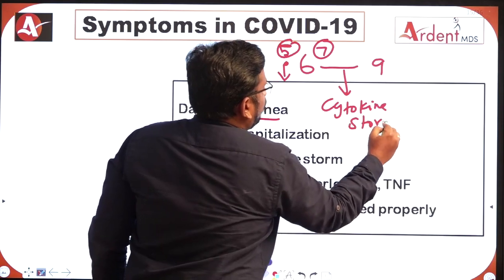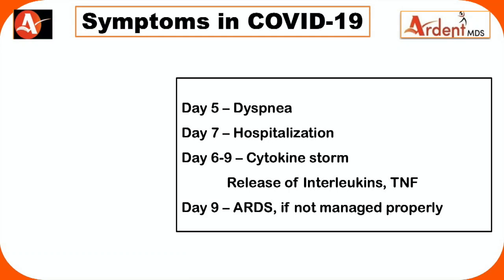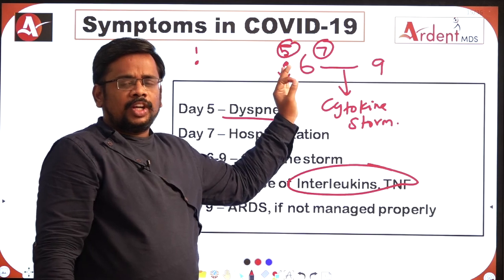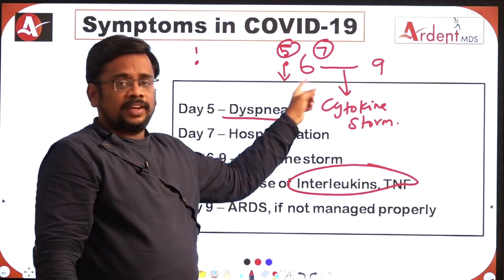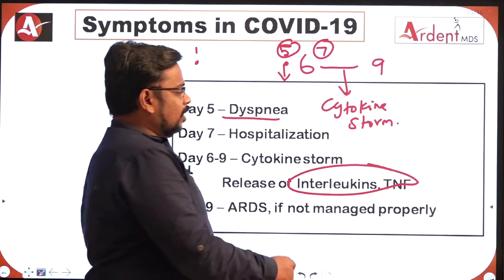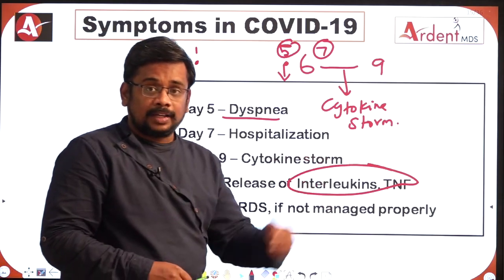From day 6 to day 9, what is called the cytokine storm occurs. The cytokine storm involves the release of cytokines like interleukins — especially Interleukin-6 — and Tumor Necrosis Factor, which affect the internal organs. To control this inflammatory response, the gold standard drug used in this phase is corticosteroids.